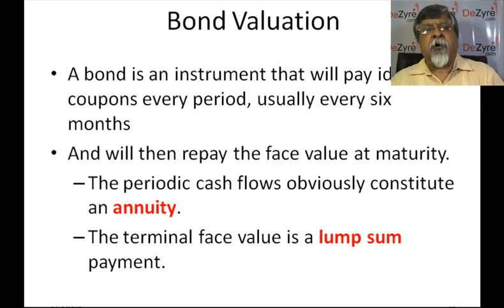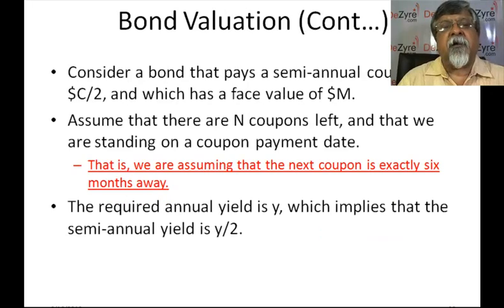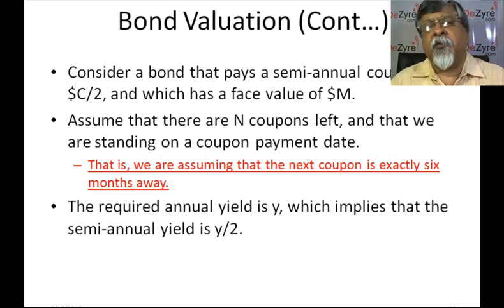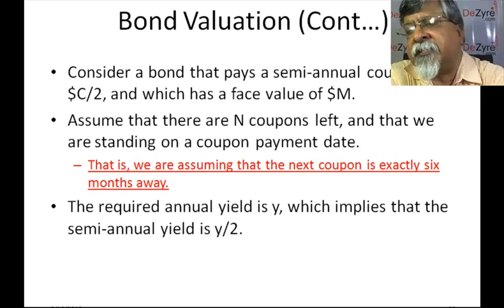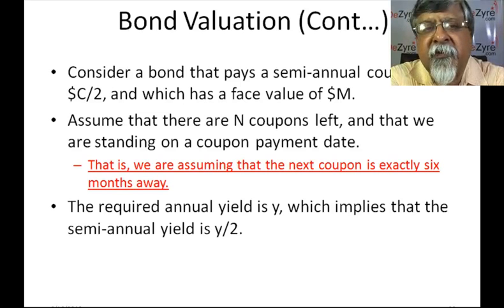How do we value a bond? A bond is an instrument that will pay identical coupons every period, usually every six months, and will repay the face value at maturity. Your coupons, which are equal cash flows at equally spaced intervals of time, obviously constitute an annuity. The terminal face value is a lump sum payment. Take the case of a bond that pays a semi-annual coupon of C/2 and which has a face value of M. M is a symbol that's normally used for face value instead of F, because F is used in the context of futures and options, and M, which stands for maturity value, is used to represent the face value.